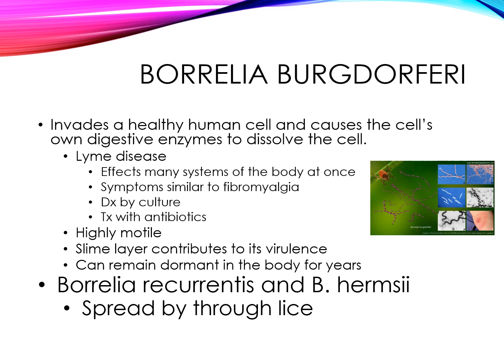Borrelia recurrentis and hermsii are known to cause relapsing fever, typically transmitted to humans by lice. Poor sanitary conditions increase the chance of transmission. It presents with a fever that can reach up to 104 degrees, and after a seven-day incubation period the individual could present with respiratory symptoms, central nervous system involvement, hepatomegaly, splenomegaly, and jaundice. Penicillin is used to treat relapsing fever, but tetracyclines can also be used. The key to prevention is eliminating infestations of ticks and lice.